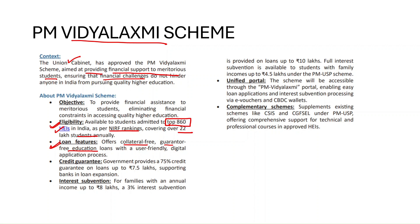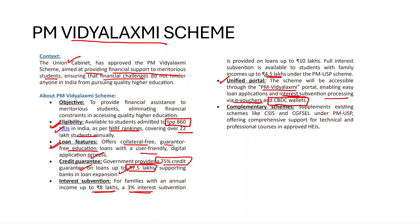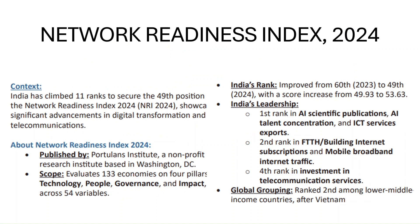The PM Vidya Lakshmi scheme offers collateral-free and guarantor-free education loans with a user-friendly digital application process. The government will provide a 75% credit guarantee on loans up to Rs. 7.5 lakhs provided to banks. If family income is up to Rs. 8 lakhs, a 3% interest subvention will be given; if it is under Rs. 4.5 lakhs, complete interest subvention applies. It has a unified portal accessible through the PM Vidya Lakshmi portal, with interest subvention processed via e-vouchers and Central Bank Digital Currency wallets.